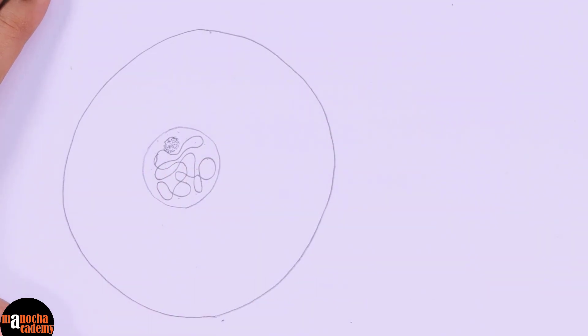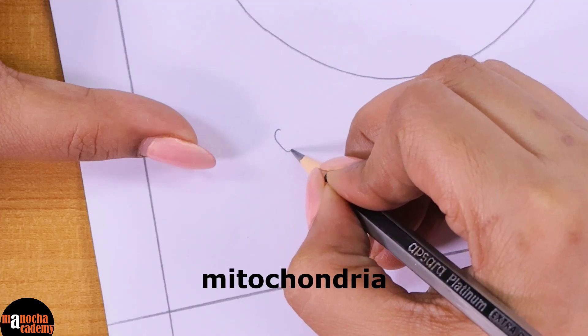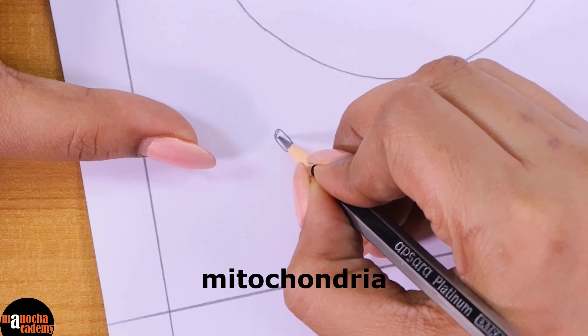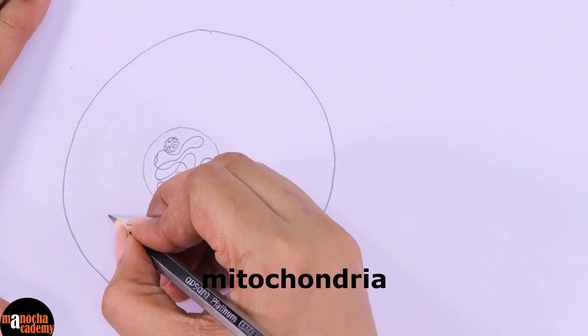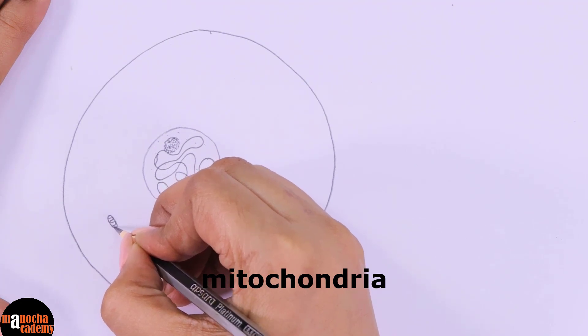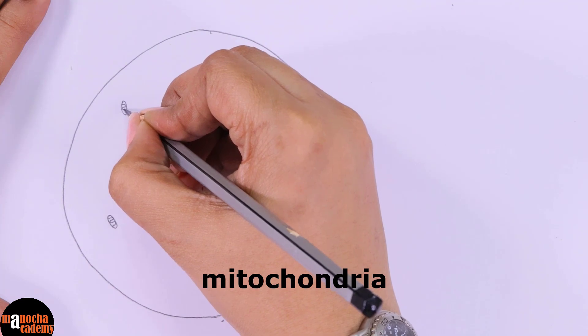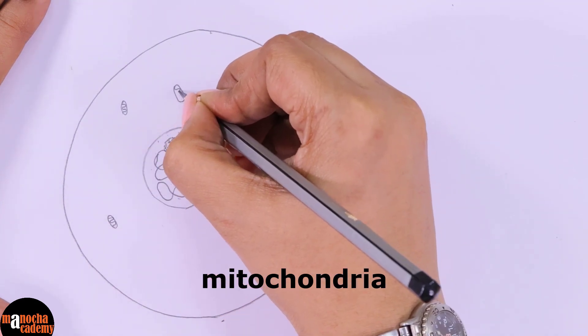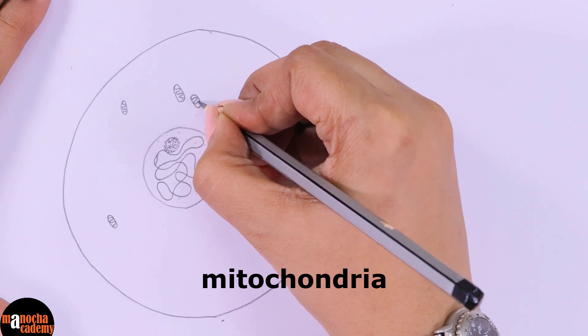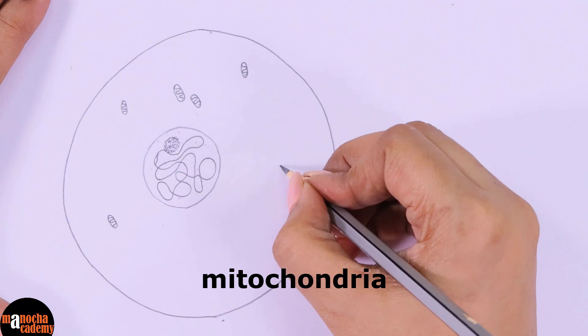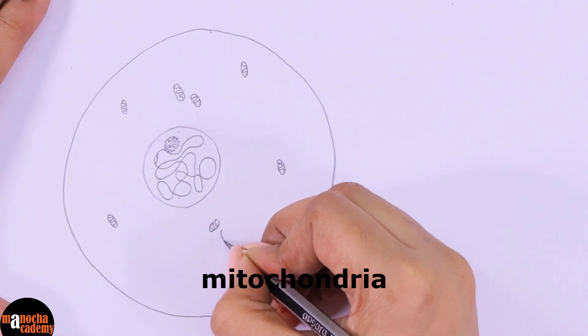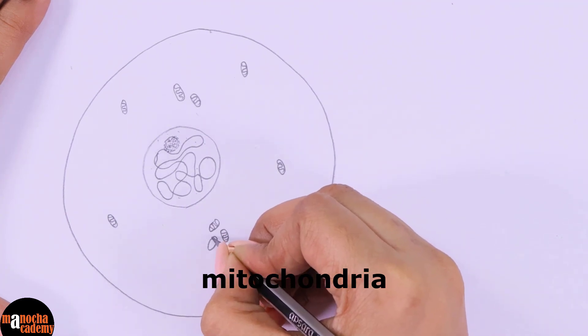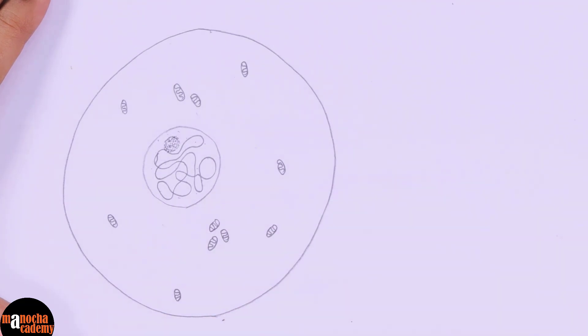Now we will draw the cell organelles one by one. So first and foremost we will draw the mitochondria. How to draw mitochondria? It is an elongated rod shaped structure like this and then we draw a zigzag line inside. That is how a mitochondria should look like and you can distribute the mitochondria anywhere you want. Make sure that the size of the mitochondria is proportionate to the size of the nucleus. It should not be so big that the mitochondria and the nucleus become of the same size. So you can distribute the mitochondria anywhere inside the cell, just making sure that the shape of the mitochondria remains the same. You can keep them in groups or clusters alright.